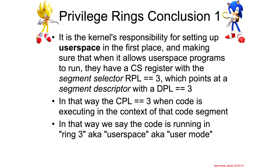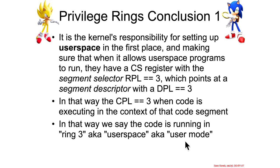The conclusion for privilege rings is that ultimately it's the kernel's responsibility to set up user space before it transitions from ring 0 to ring 3. That means setting up user space so that it has a code segment register where the segment selector has an RPL of 3 — meaning the CPL will be 3 — and whatever selector is used should select a descriptor with a DPL of 3. By doing this, the kernel effectively creates code running in ring 3, aka user space, aka user mode.